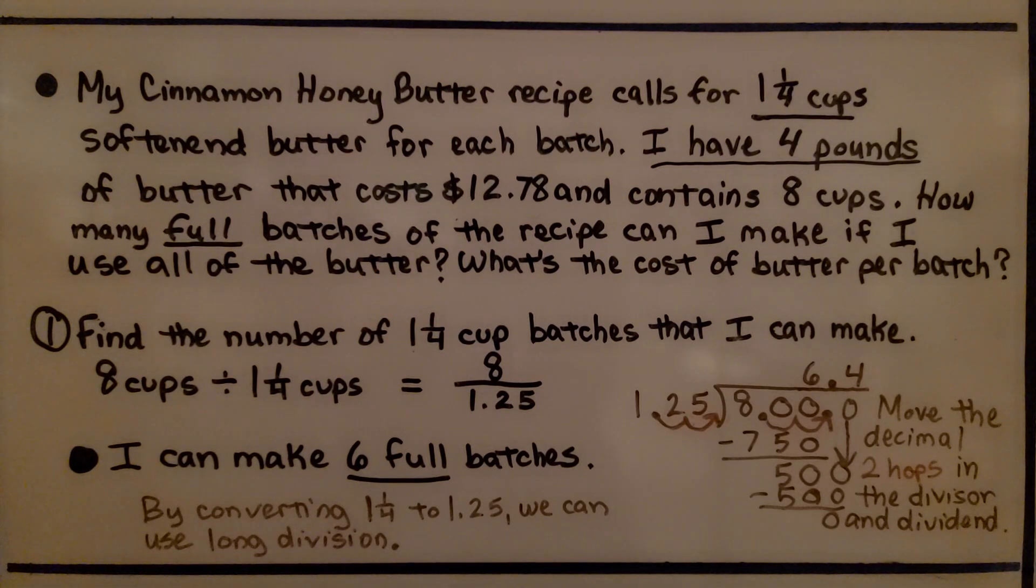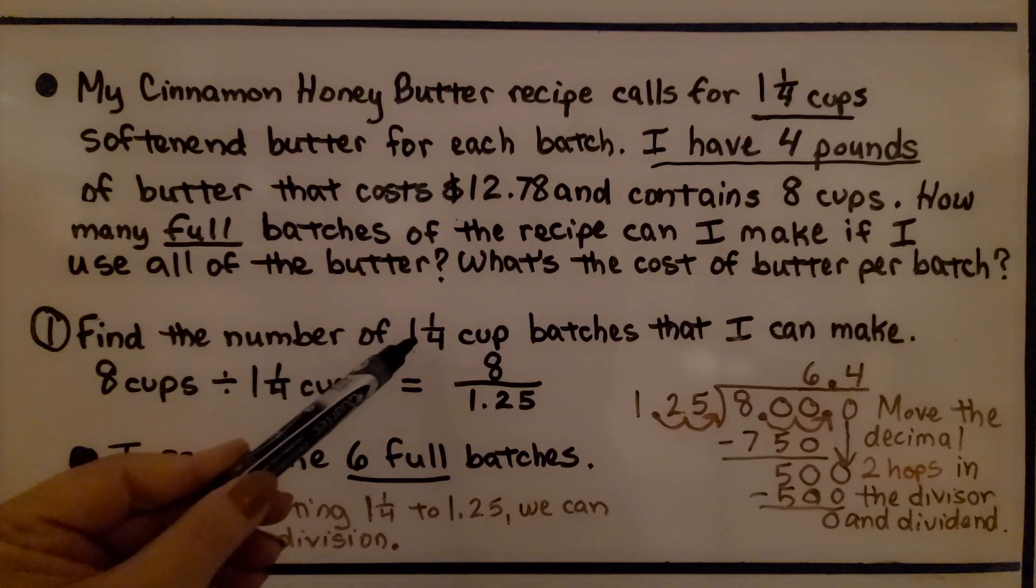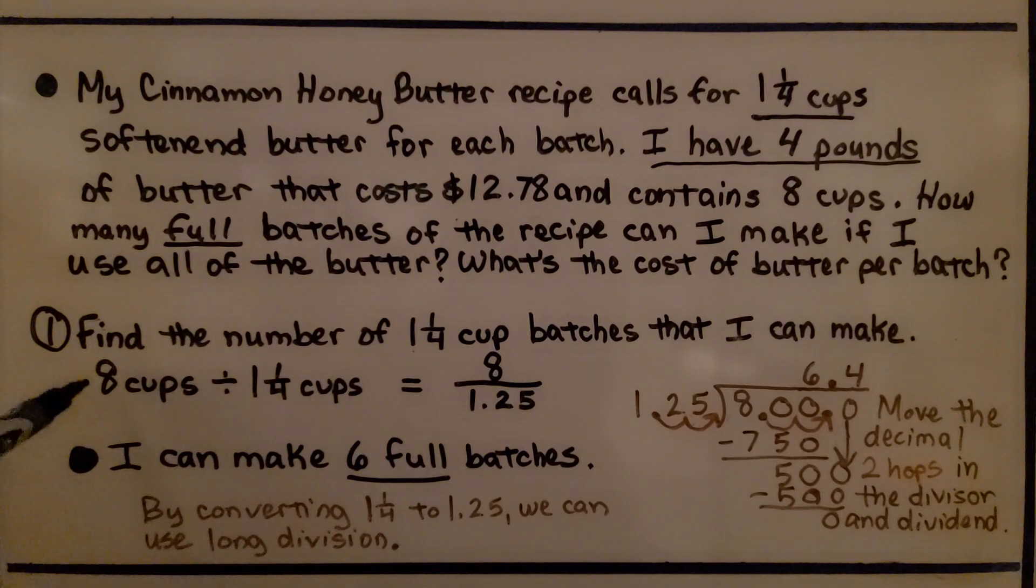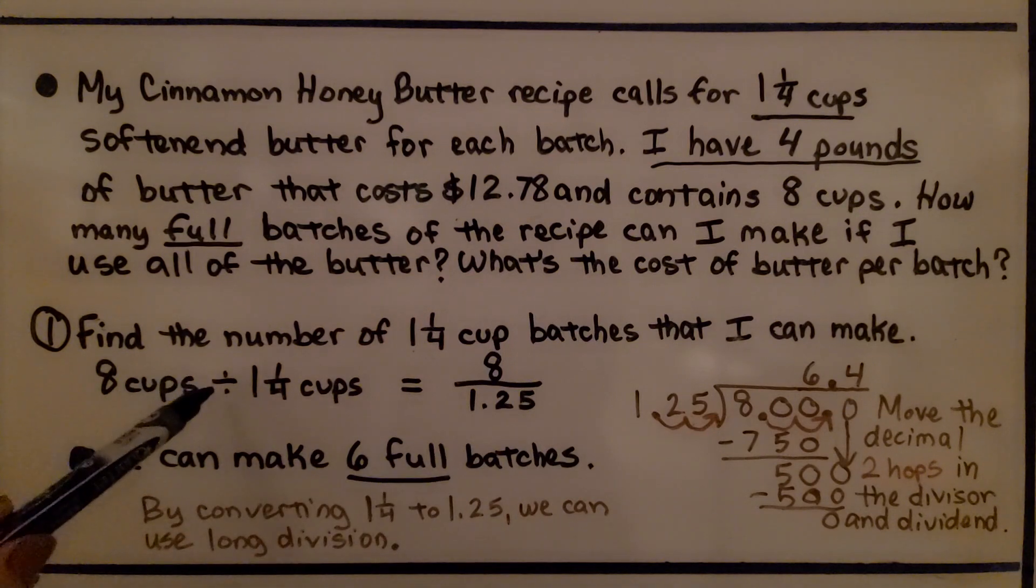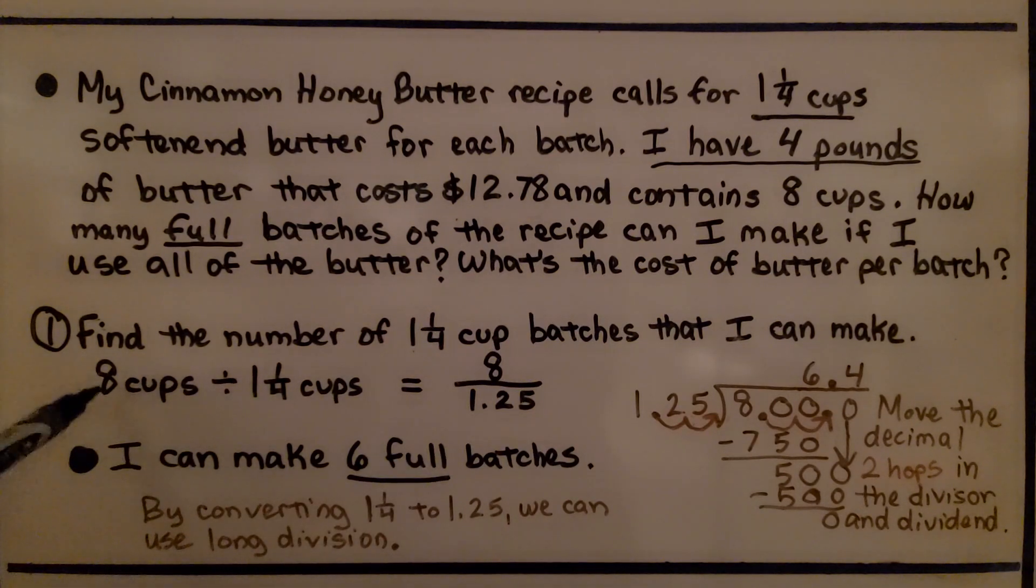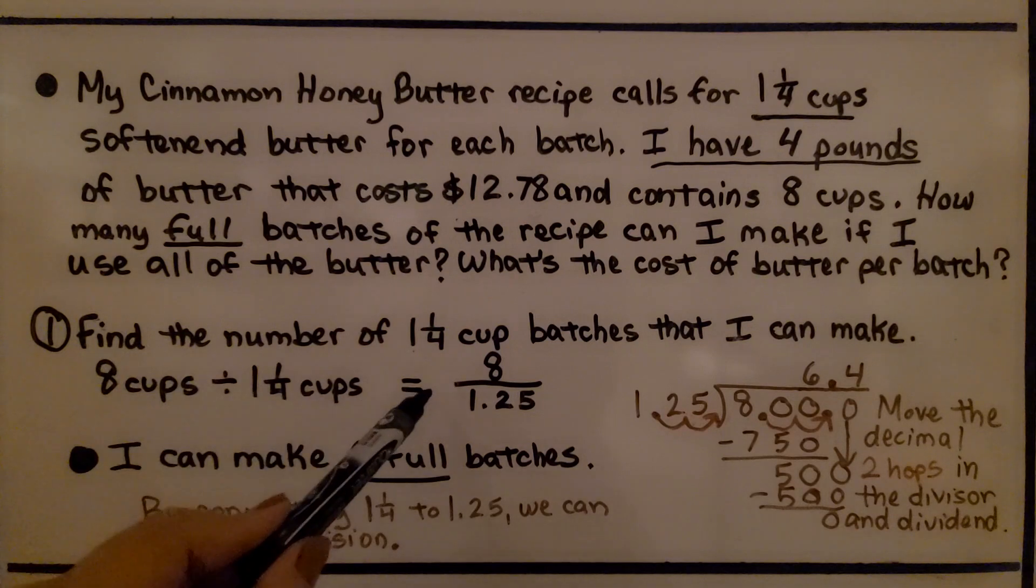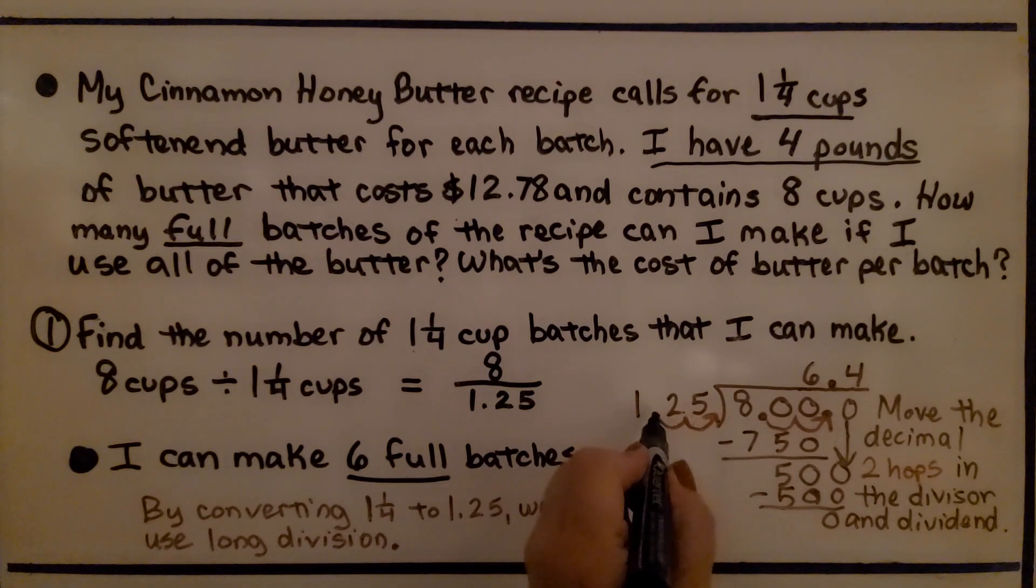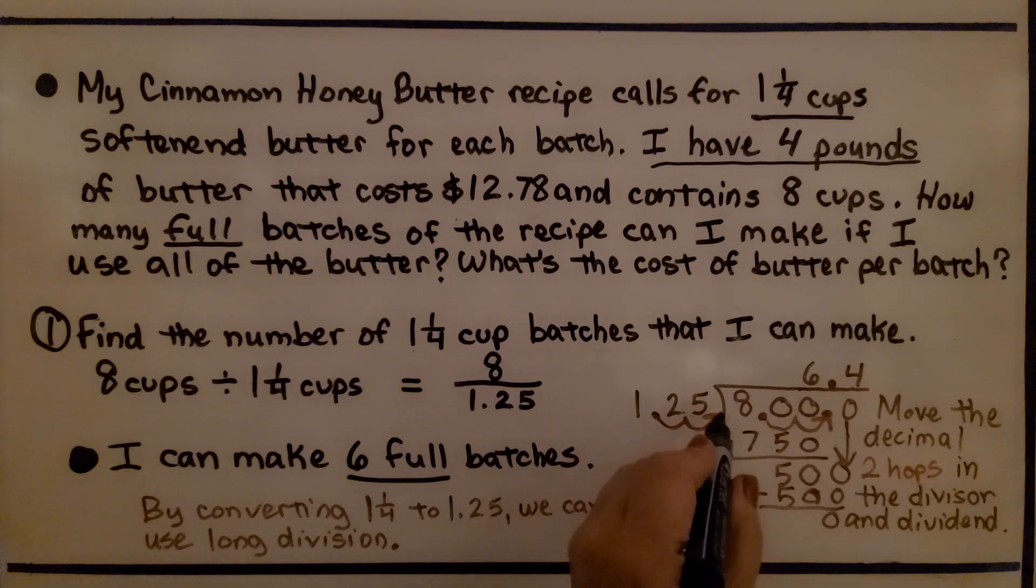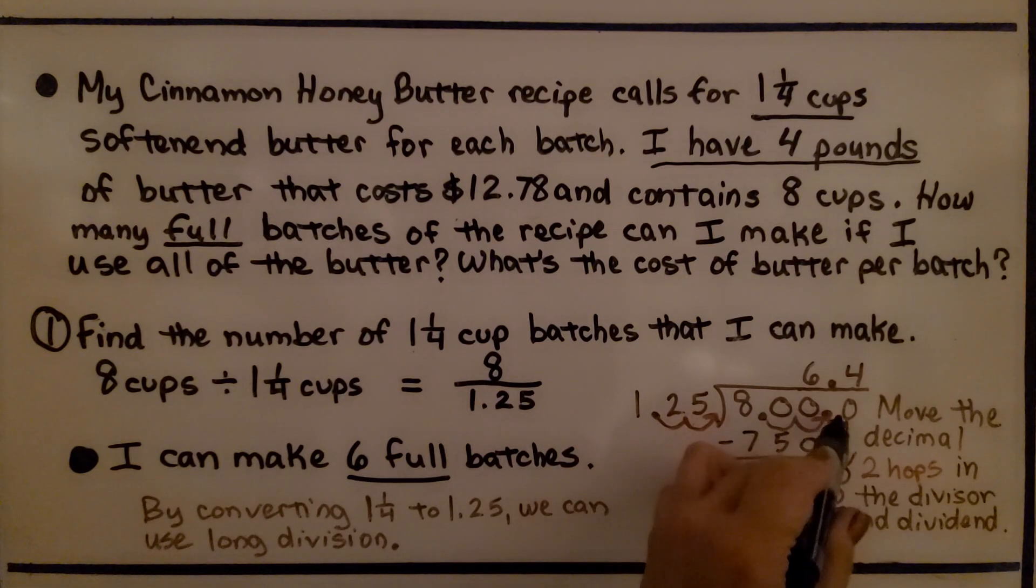how many full batches of the recipe can I make if I use all of the butter? And what's the cost of the butter per batch? First, we find the number of 1 and 1/4 cup batches that I can make. We're going to do 8 cups divided by 1 and 1/4. It'll be easier to do the division if I change this to 1.25. We need to hop the decimal point over 2 times to the right,